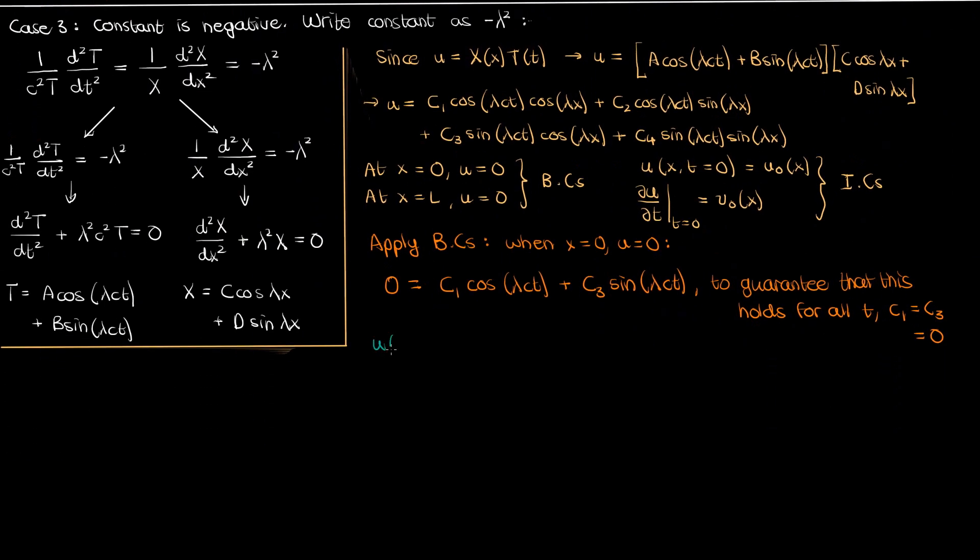Now with that out of the way this is what we're left with for u once we use the fact that c1 and c3 are 0. To make things easier I'll take the sine lambda x common from the right hand side and in addition I'll replace the constants c2 and c4 with small a and b.